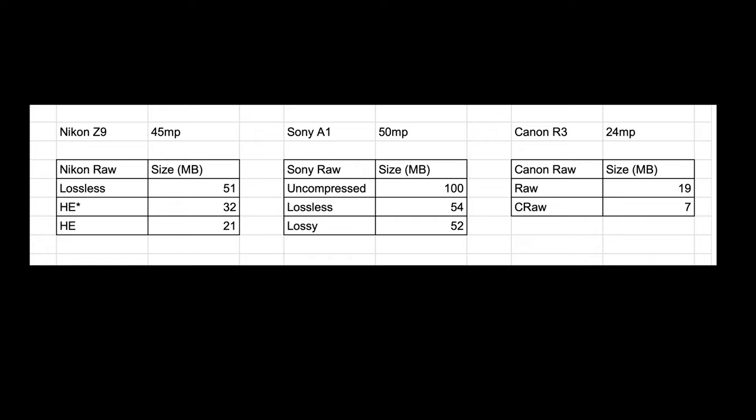For Sony, the uncompressed is huge — 100MB. To put it in perspective, 10 shots will be 1GB, 100 shots will be 10GB, and 1,000 shots would be 100GB. So it makes a difference. Most people wanted the lossless compressed because Sony's compressed RAW has artifacts.